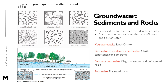For water to move through underground rock, the pores and fractures in the rock must be connected. If a rock has good connections between pores or fractures and water can move freely through them, the rock is considered permeable. If the pores or fractures are not connected, the rock material cannot produce water and cannot be considered an aquifer. Rock types range from very permeable sands and gravels, to permeable sandstones and conglomerates, to not permeable clay, mudstones, and unfractured rock.